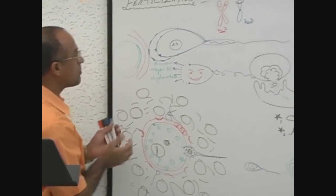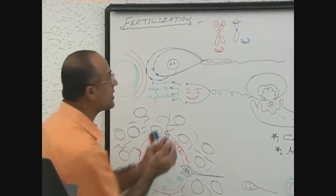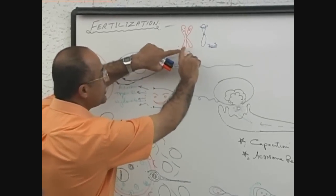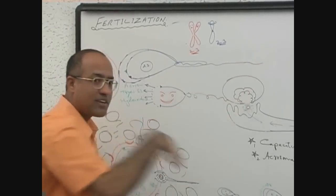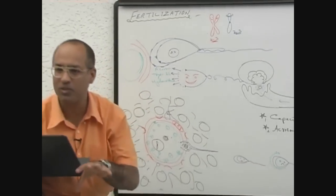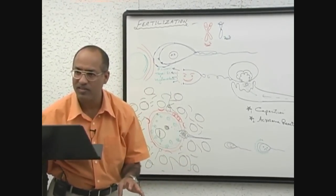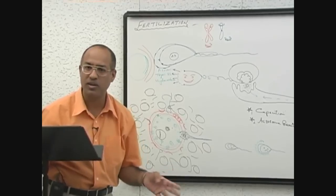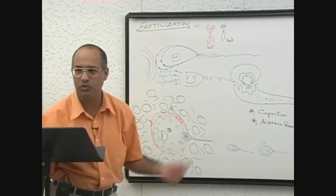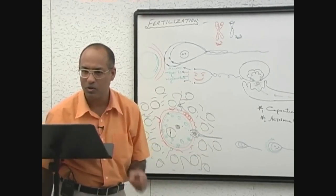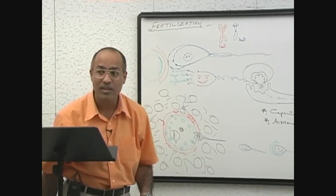During the polar body formation process or during the completion of the second meiotic division, every doublet of the chromosome is separated. One group of chromosomes gets all the cytoplasm along with the nucleus, and other group of chromosomes doesn't get much cytoplasm. That unfortunate one which does not get any cytoplasm is called polar body because that is pushed on one pole of the whole zona pellucida, and the remaining ovum is called definitive.